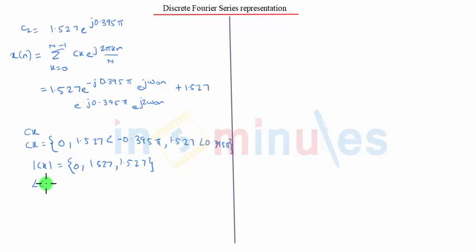For the phase spectrum, we calculate the angle of cₖ, that is 0, minus 0.395 π, and 0.395 π. Therefore, both the spectra are periodic with period n equals 3. Thus, we plot the magnitude and phase spectrum accordingly.